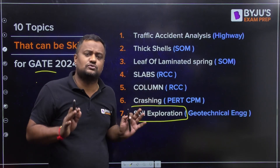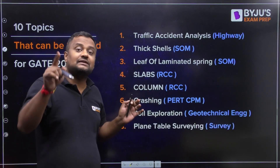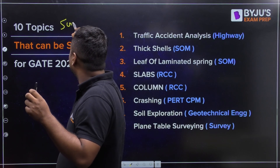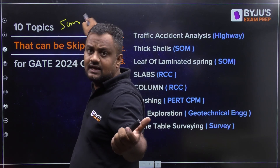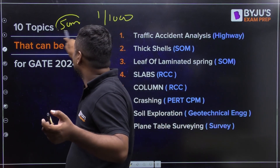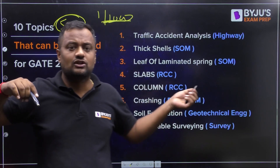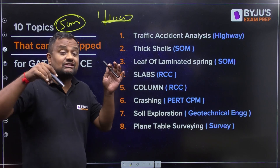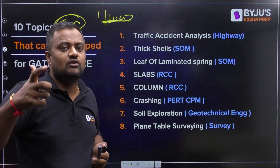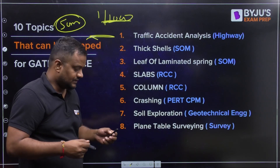The eighth topic is plain table surveying. Questions have been asked a couple of times but are based on aptitude — for example, if the error in centering is 5 cm and scale is 1:1000, what is the error on the map? These are asked, but the core concepts of plain table surveying like the two-point problem and three-point problem have not been asked. Questions are more related to repetitive or chain surveying type problems.